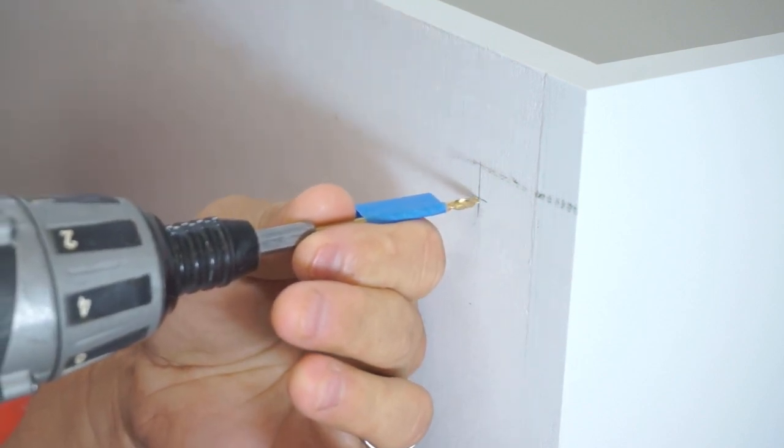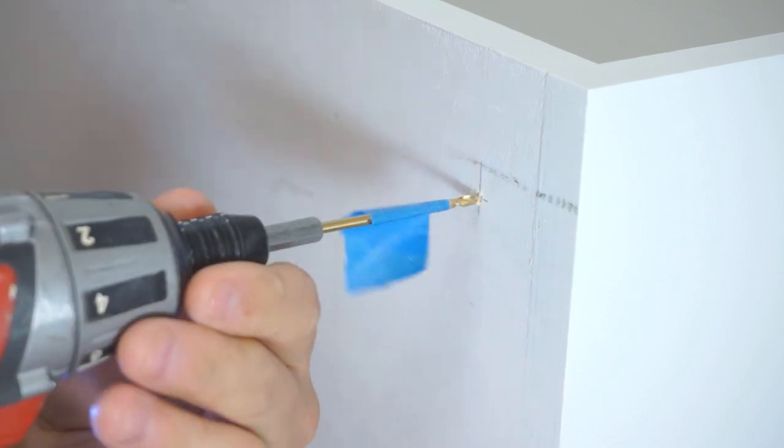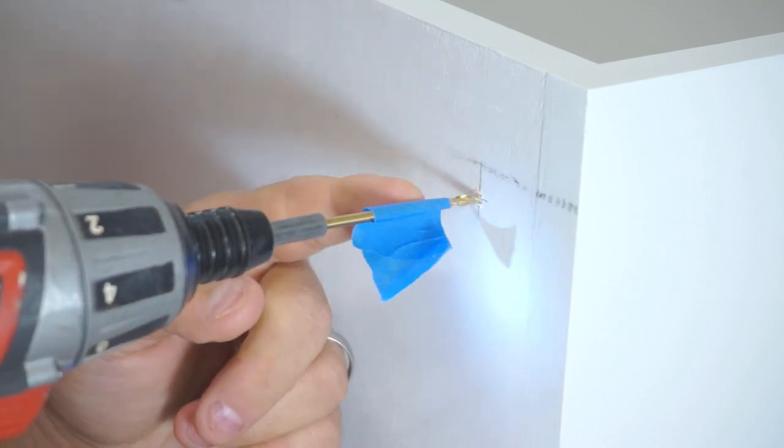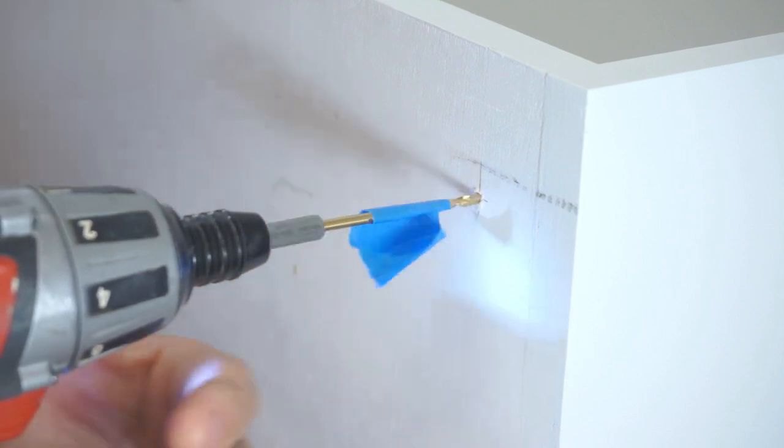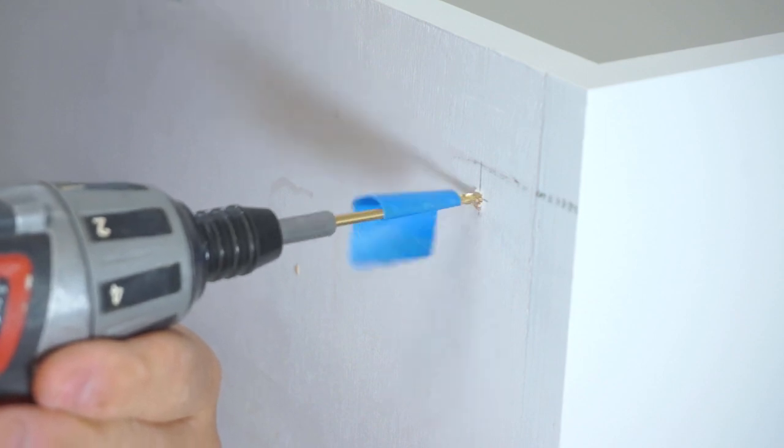So here we are going to drill our pilot hole but I've added a blue flag on here that's at five-eighths deep so that we don't go all the way through to the other side.